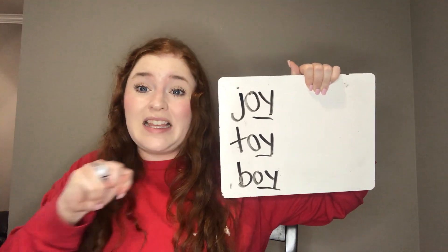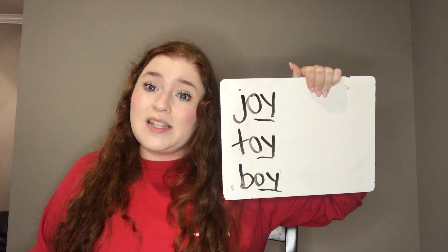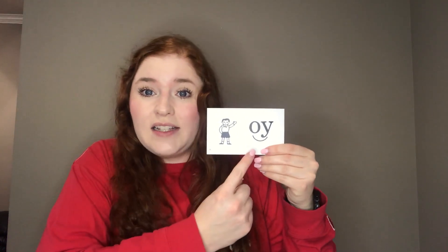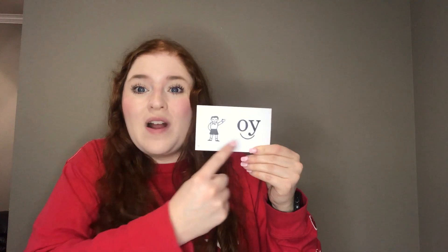But this diphthong comes at the end of a word — that's where we're typically going to see it. So let's look at our card. It says O-Y, and it has our little diphthong sign, and this is a boy. So we're going to say O-Y, boy, /oy/. O-Y, boy, /oy/. Awesome job. Now we're going to lock that into our brains and we're going to code some words. We're going to apply what we've learned to coding our words.